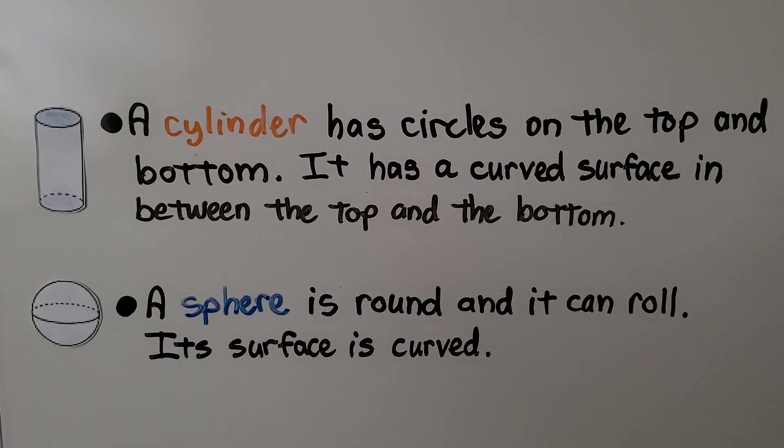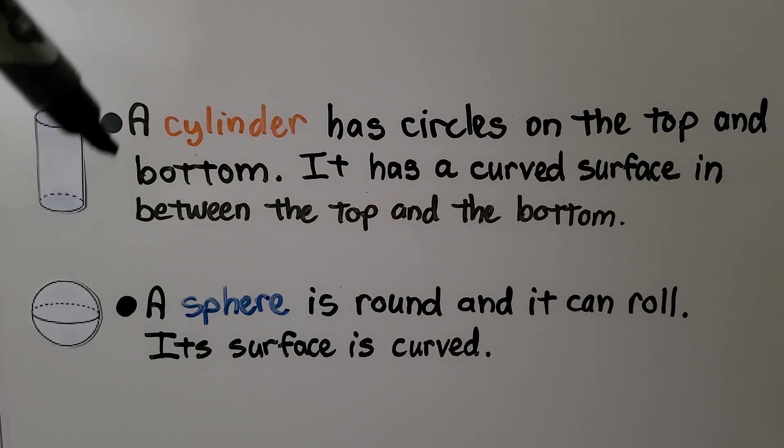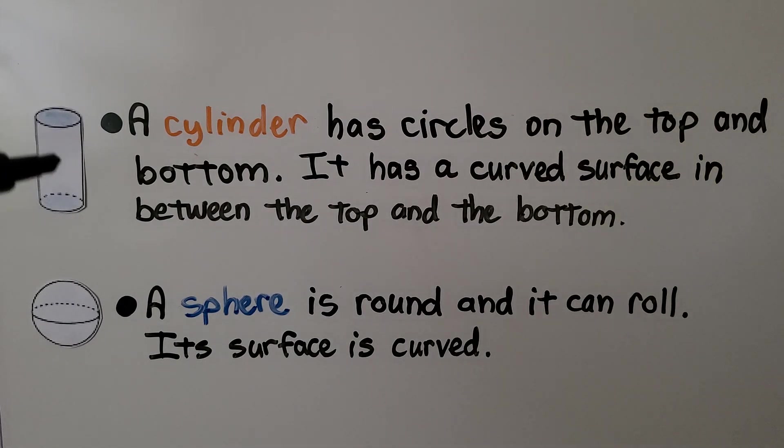A cylinder has circles on the top and the bottom. It has a curved surface between the top and the bottom. A sphere is round and it can roll. Its surface is curved. It's like a ball.